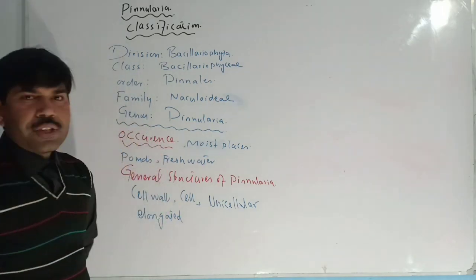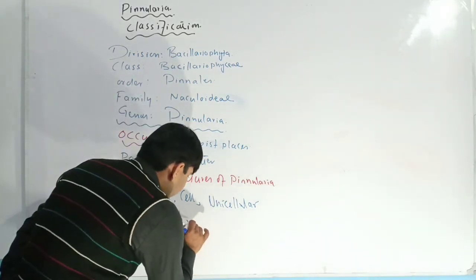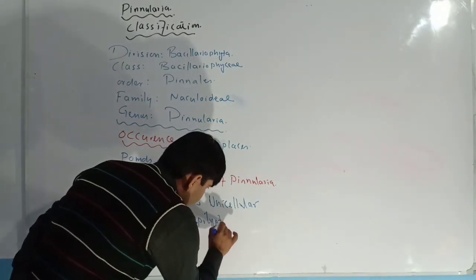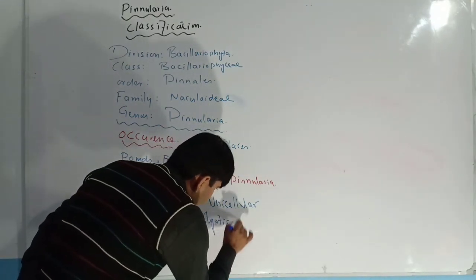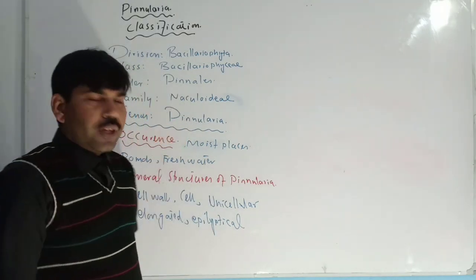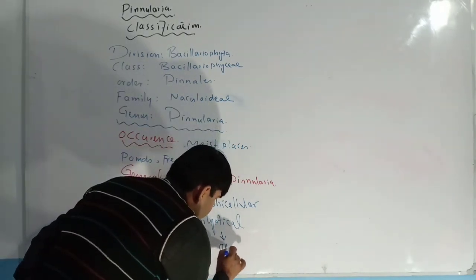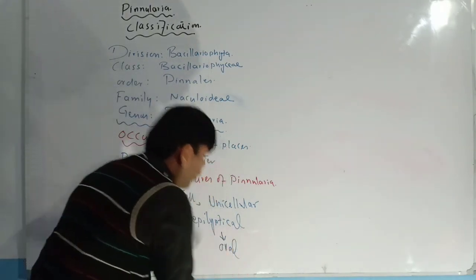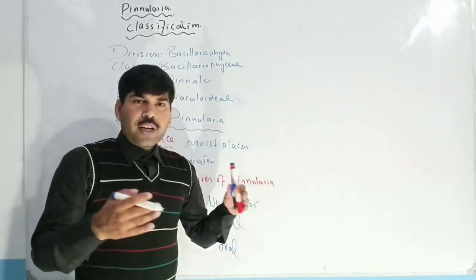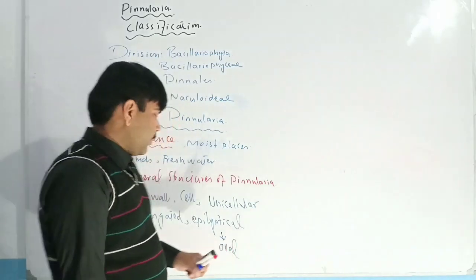The shape of Pinnularia is elongated and elliptical. Elliptical means oval in shape. So the body is rather elongated as well as oval — not totally round.